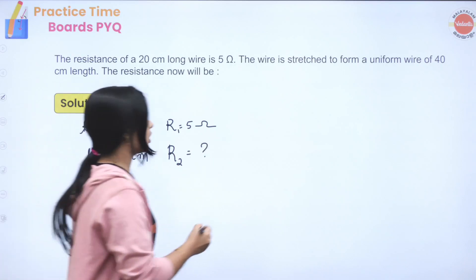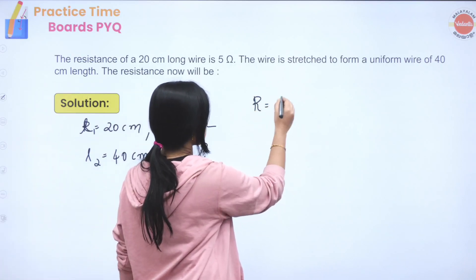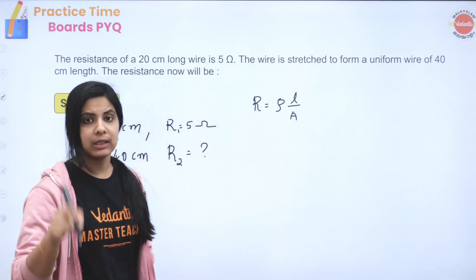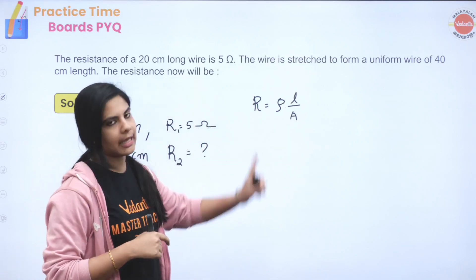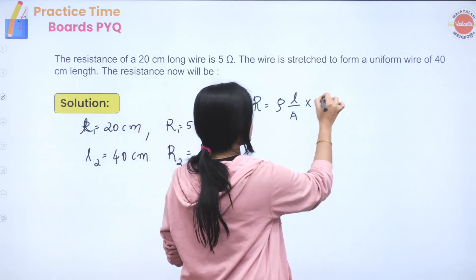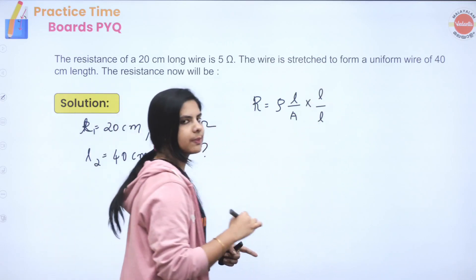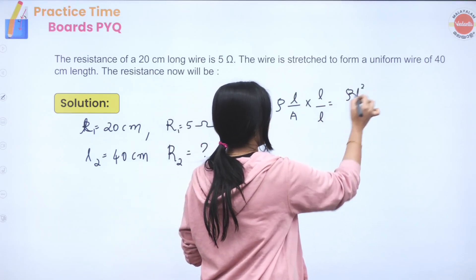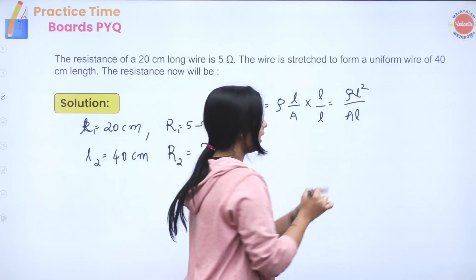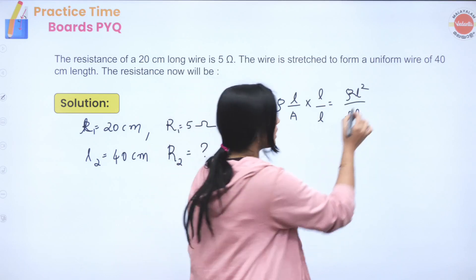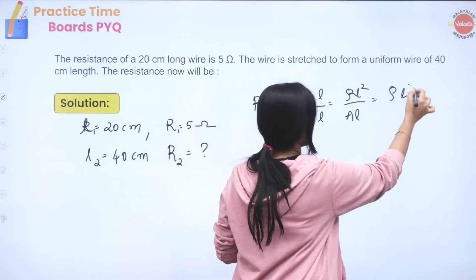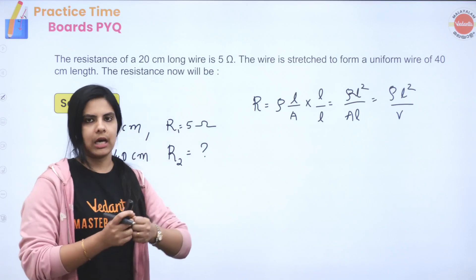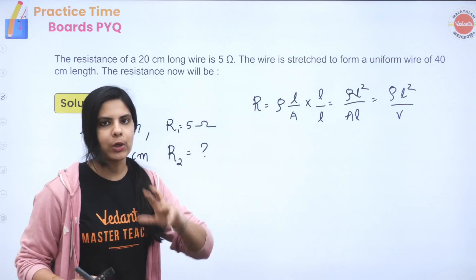We will use the equation R = ρL/A, where ρ is the resistivity, L is the length, and A is the cross-sectional area. Multiplying numerator and denominator by L, we get R = ρL² / (A·L), which is ρL² divided by volume V.